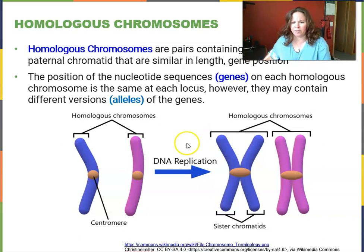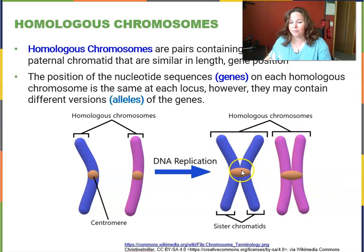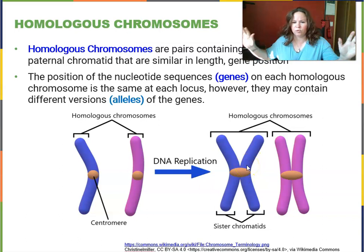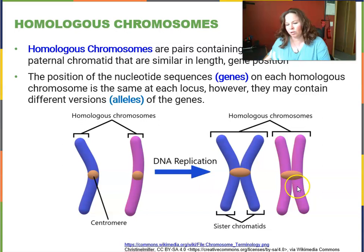Here's chromosome pair number one, a homologous pair. Before a cell is ready to divide, these chromosomes have to duplicate. After DNA replication, this is what duplicated chromosomes look like — they're held together by what's called a centromere, a bunch of proteins. That's where they'll be pulled apart during cell division so each daughter cell gets a copy. The whole structure is called a chromosome, each side is called a chromatid, and because they're duplicates, these are called sister chromatids.